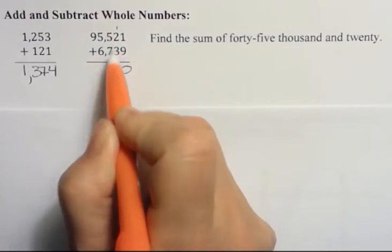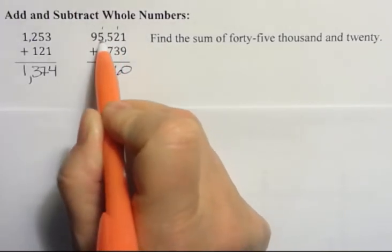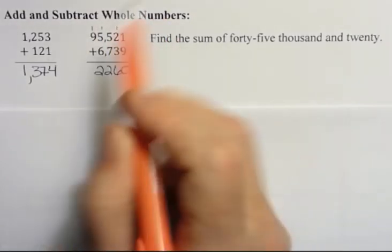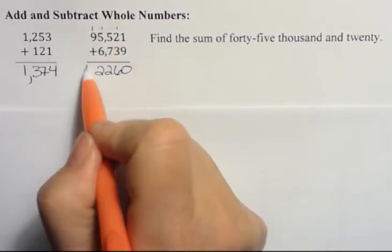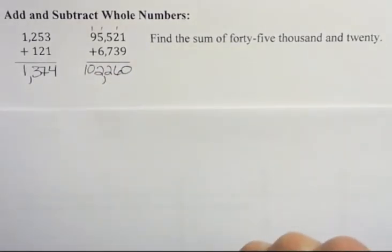Seven plus five is 12. Put the two, carry the one. Six plus five is 11, plus one is 12, carry the one. And then nine plus one is 10. And again, I'm going to put a comma between the periods, 102,260.